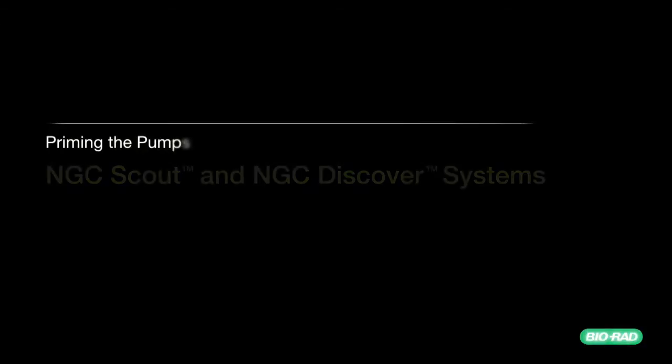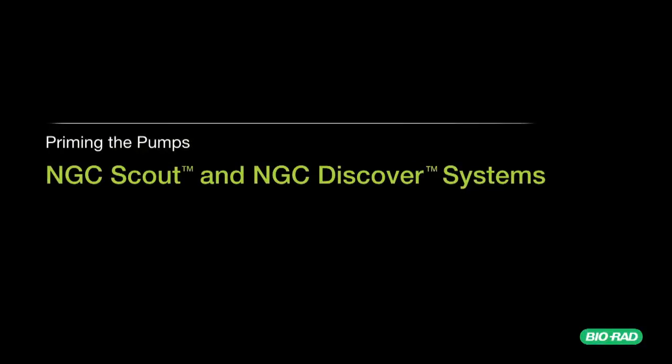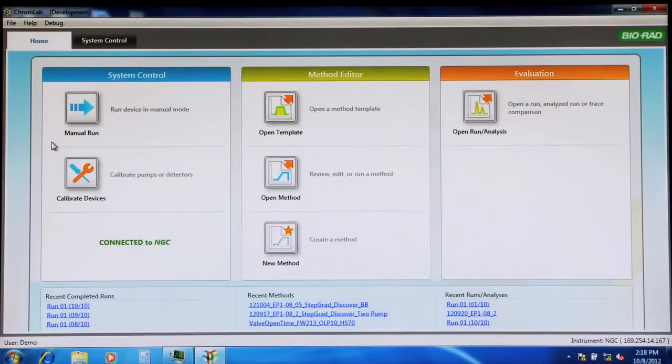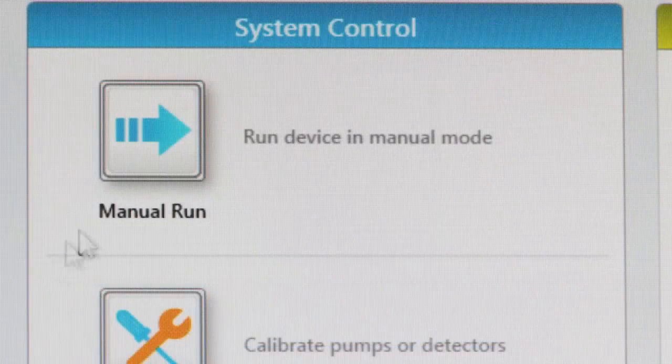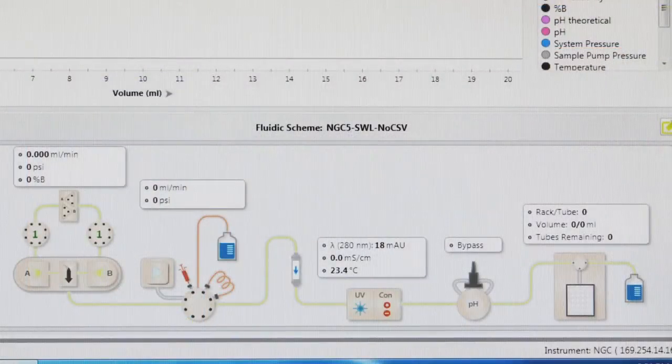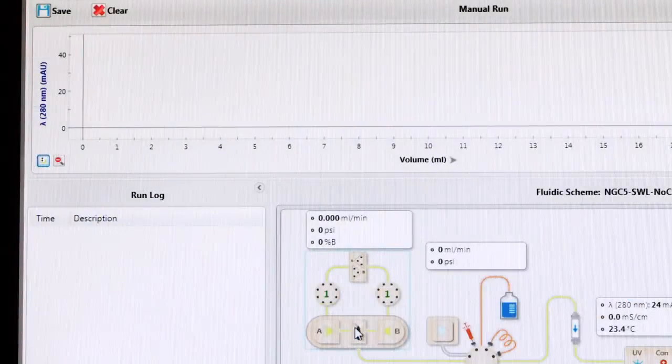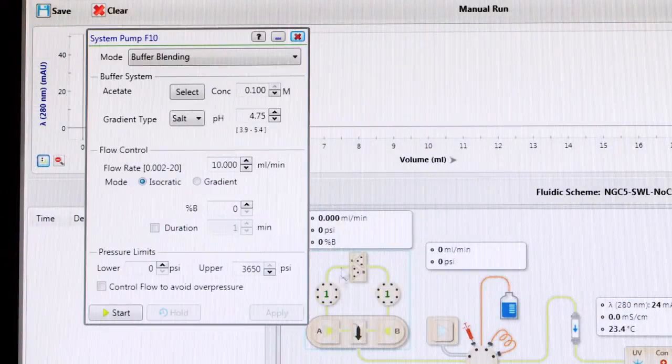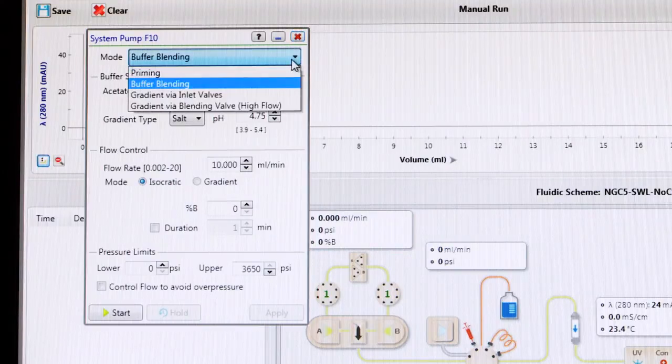NGC Scout and Discover systems. Launch ChromeLab software and connect to the NGC instrument. In the home screen, select Manual Run. The correct configuration should appear in the fluidic scheme shown. Double-click the pump icon. The faceplate appears on the screen.